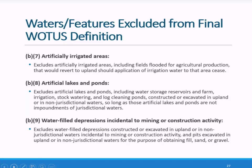The agencies are codifying additional exclusions generally consistent with longstanding practice, including artificially irrigated areas that would revert to uplands should irrigation water cease, and water-filled depressions incidental to mining and construction activity, as well as pits excavated in uplands or non-jurisdictional waters for the purpose of obtaining fill material, sand, or gravel. The exclusion for artificial lakes and ponds complements the lakes, ponds, and impoundments category and clarifies that an artificial lake or pond that meets the conditions of a jurisdictional impoundment is not excluded. All other lakes and ponds constructed or excavated in uplands or non-jurisdictional waters are excluded.